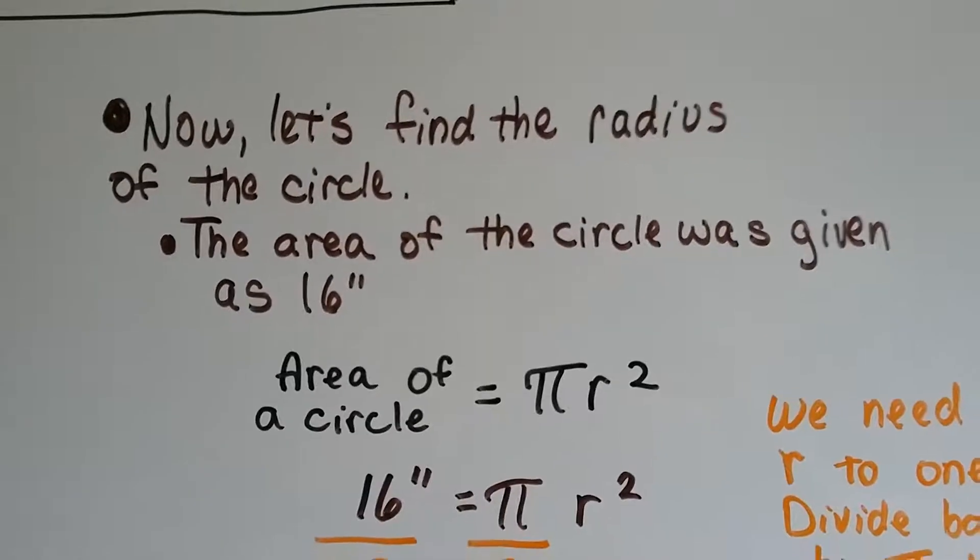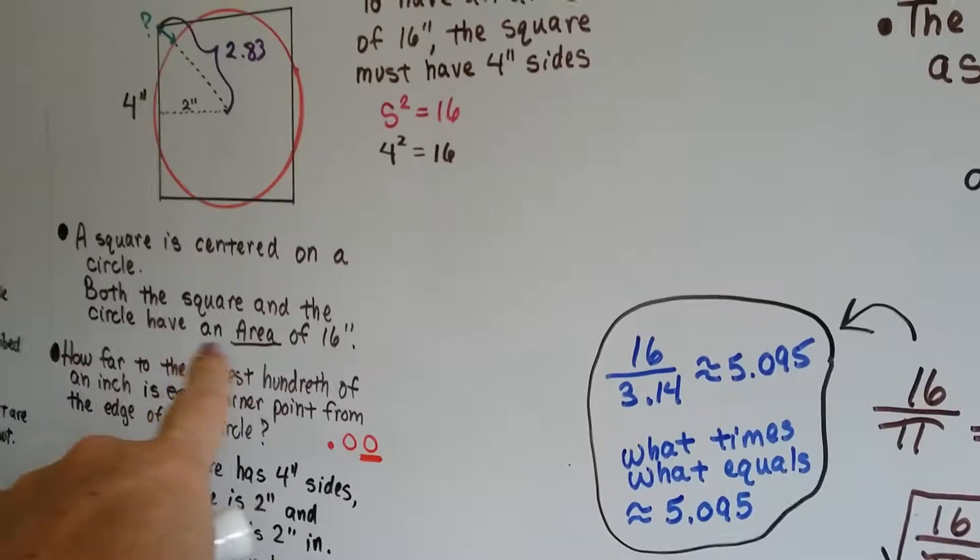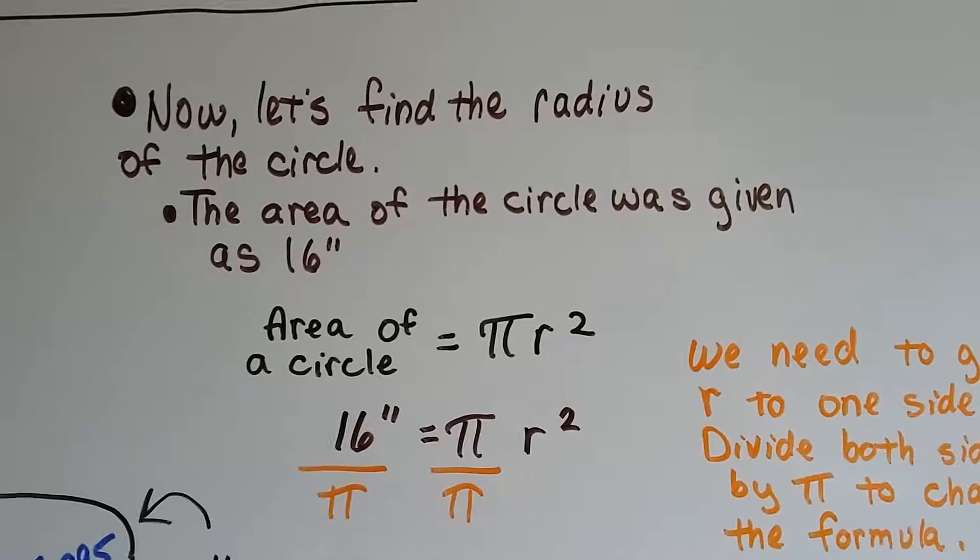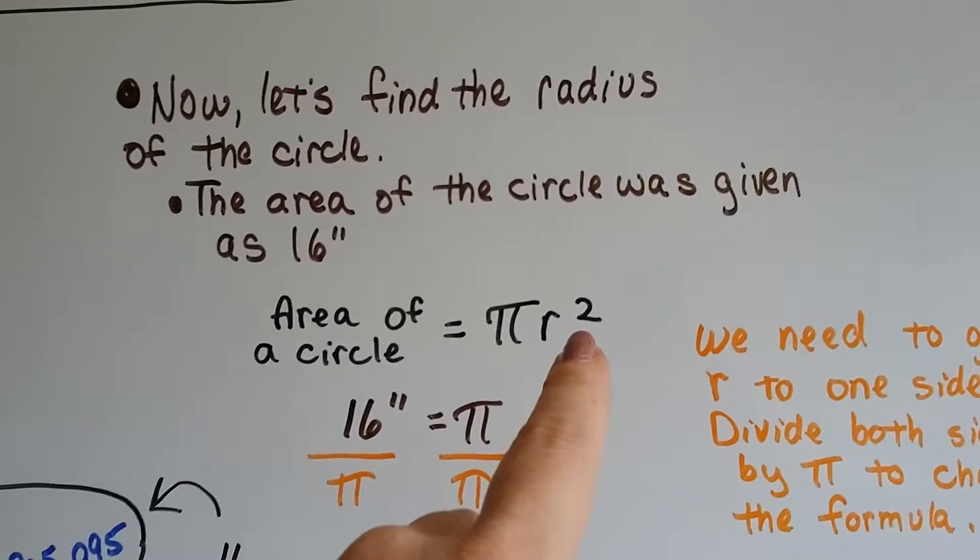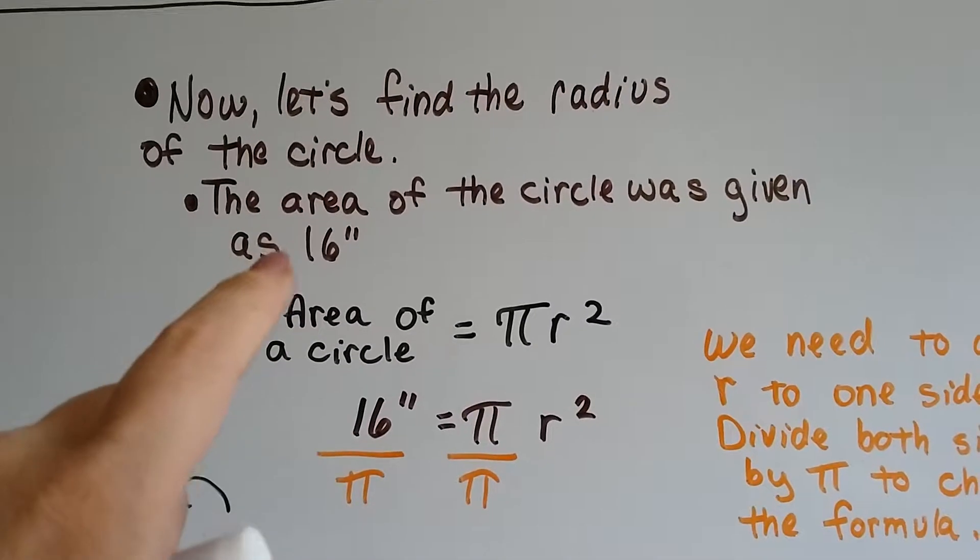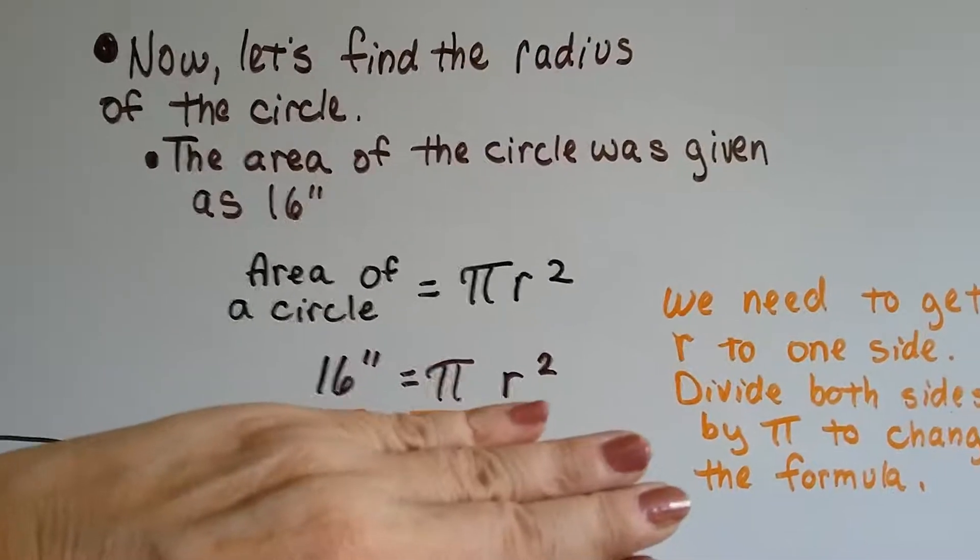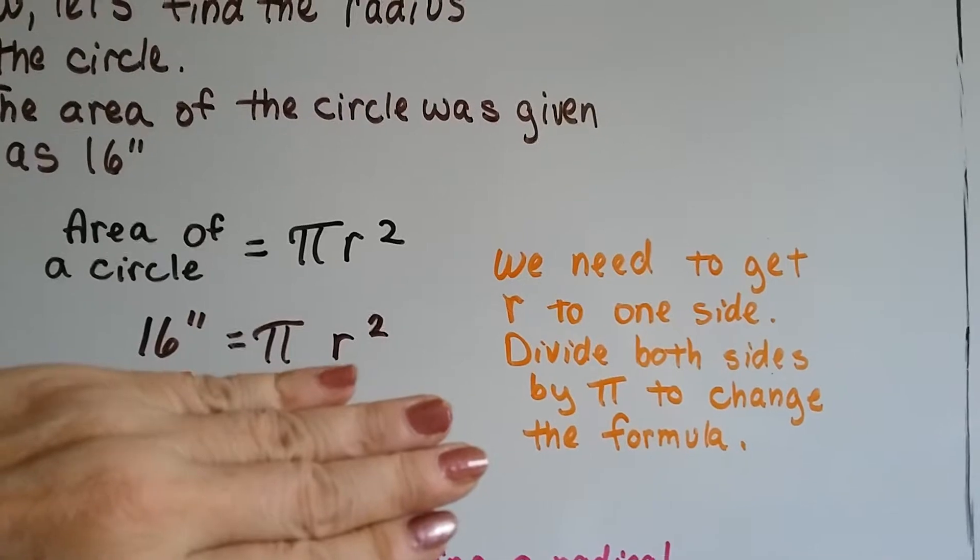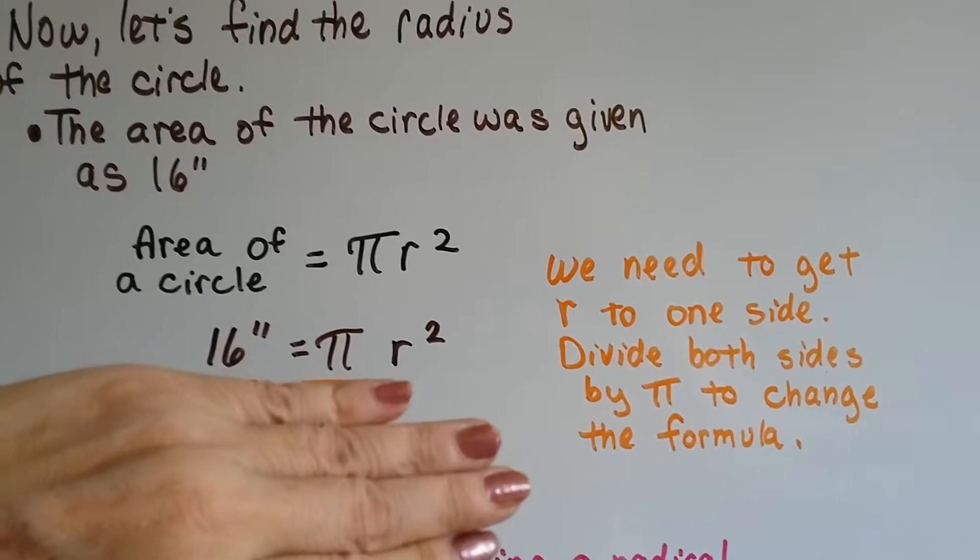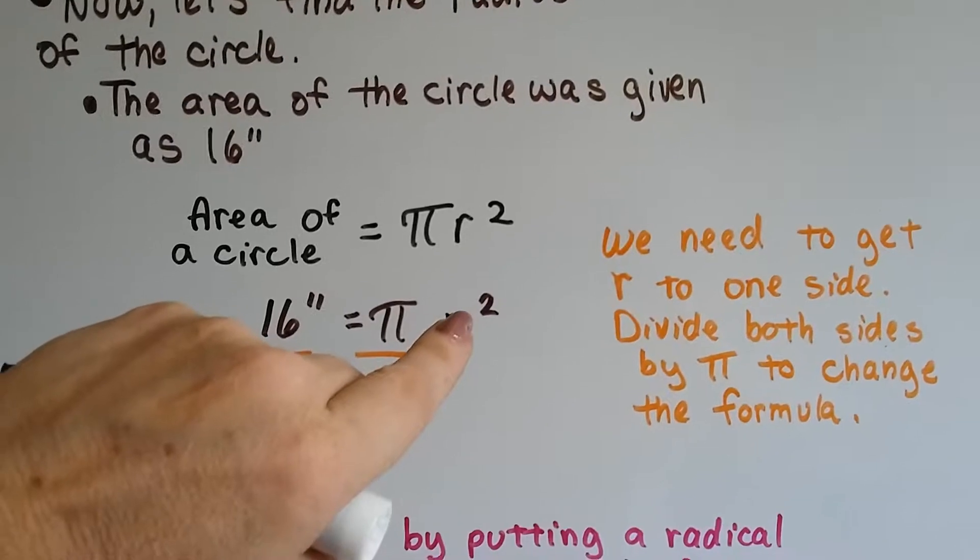Now what we're going to do is find the radius of the circle. Now, the area of the circle was given as 16 inches. It said that they both had an area of 16, the circle and the square. So that means using the formula for the area of a circle, it's pi r squared. Well, if that's the area of a circle and the area is 16, we can say 16 equals pi r squared. Just put it in place of the words. Now, we need to get the r, the radius, to one side. So we divide both sides by pi to change the formula to fit our needs because we're trying to find the radius. So we need to get this r on one side of the equal sign by itself.